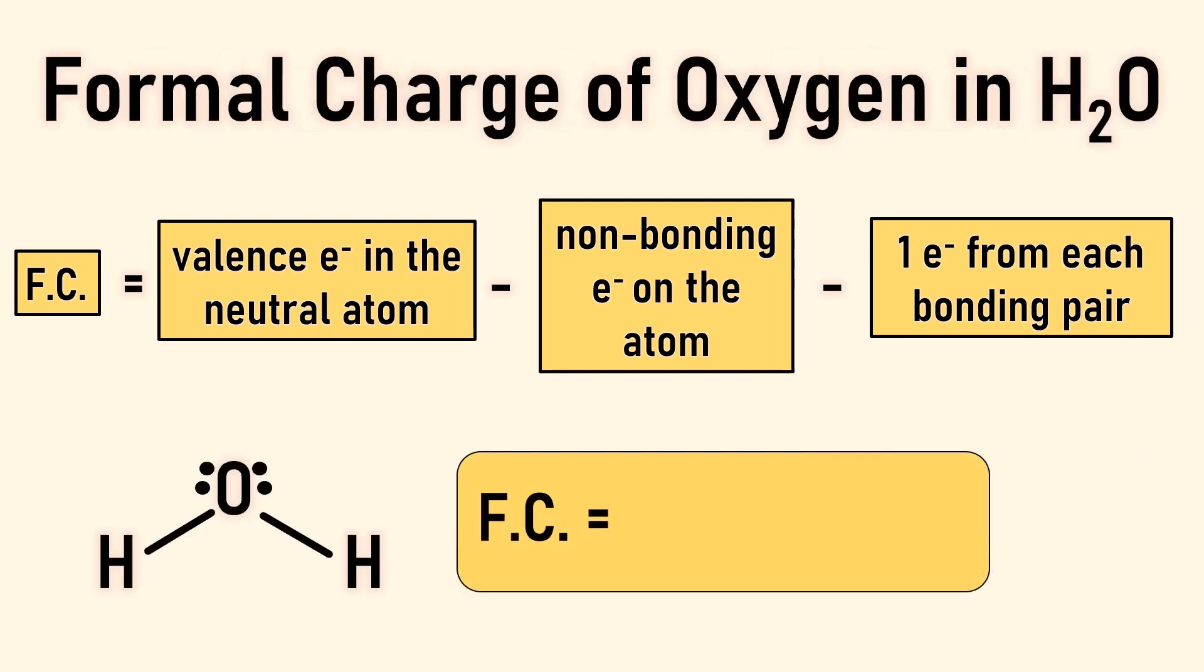Let's start with a simple example of finding the formal charge for oxygen in water. Neutral oxygen has six valence electrons in its valence shell. The oxygen in water owns the two lone pairs of electrons, thus we subtract four non-bonding electrons.